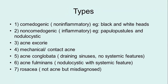Comedogenic and non-comedogenic acne; acne excoriée, more common in females due to picking; mechanical or contact acne from things in contact with the skin. Acne conglobata is a serious condition with draining sinuses but no systemic features, usually occurring in males. Acne fulminans has similar features to acne conglobata with nodulocystic lesions and draining sinuses, along with systemic features. Rosacea, which is actually a misnomer — it's not acne, but is called acne rosacea.